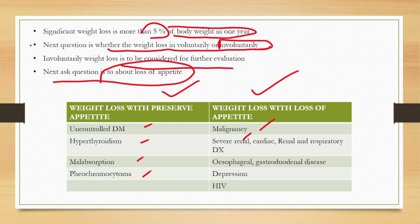Weight loss with loss of appetite means very sinister causes like malignancy, severe renal, cardiac, or respiratory failure, esophageal and gastrointestinal diseases where the patient gets pain on eating and avoids eating altogether, depression, and HIV. These are the differentials based on whether appetite is preserved or lost.